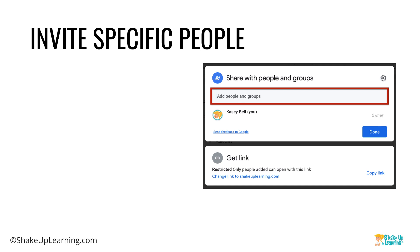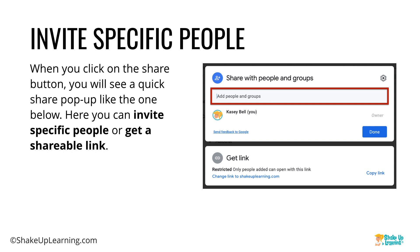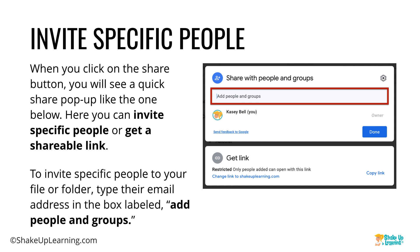You can share from multiple applications, and finding that share button is the first step. If you want to invite specific people, click on that share button and a pop-up will appear. This is where you can invite specific people or get the shareable link. To invite people, just start typing their email address in the box that says 'Add people and groups.' That's a simple way to share.